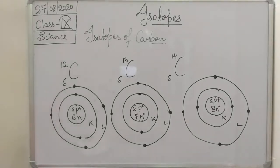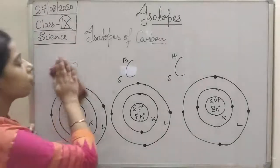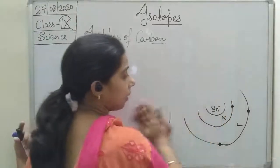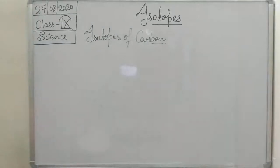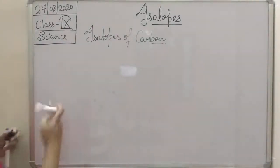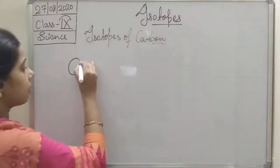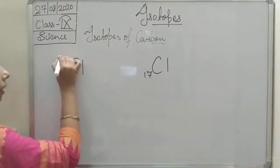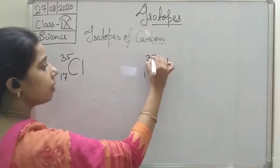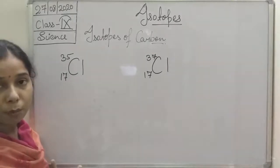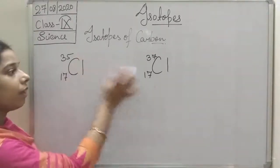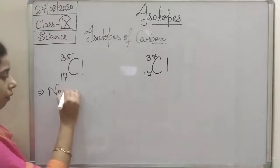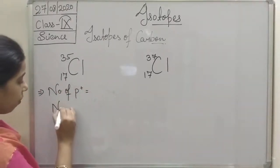Let me discuss one more example and then we will move on. There are isotopes of oxygen and other atoms too. We will discuss the isotope of chlorine. Chlorine can exist in two isotope forms: chlorine-35 and chlorine-37. By this, we will find the number of protons and neutrons.